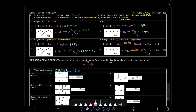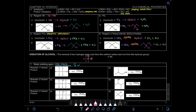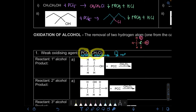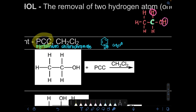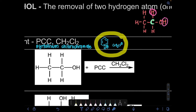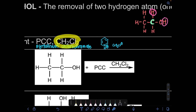So what is the product? For the oxidation of alcohol, there are 2 types — with a weak oxidizing agent and with a strong oxidizing agent. On this page, we're going to look at the weak oxidizing agent. For the weak oxidizing agent, there's only 1 reagent: PCC in CH2Cl2. PCC is a short form for pyridinium chlorochromate. CH2Cl2 is your inner solvent.